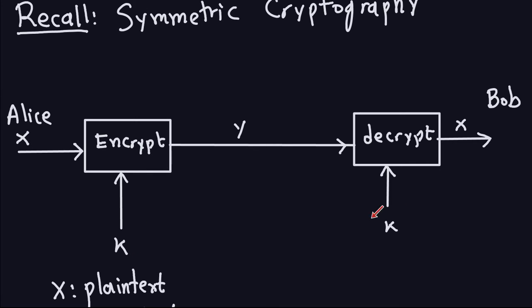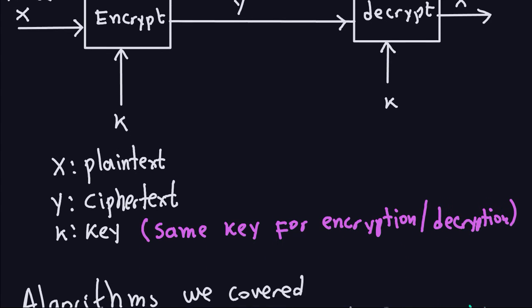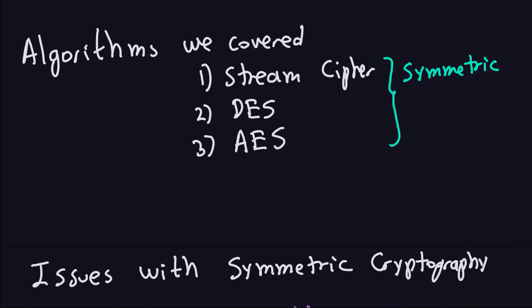So the key must be established even when the parties cannot meet to share it. We were doing symmetric cryptography under the assumption that they already share the key — but how do we share it, and how do we share it securely? If we had a secure channel to send the key, why not use that channel for all communication? The problem is that all channels are insecure, so we need a way to share keys when parties cannot meet. That is the key distribution problem — a big problem in symmetric cryptography.